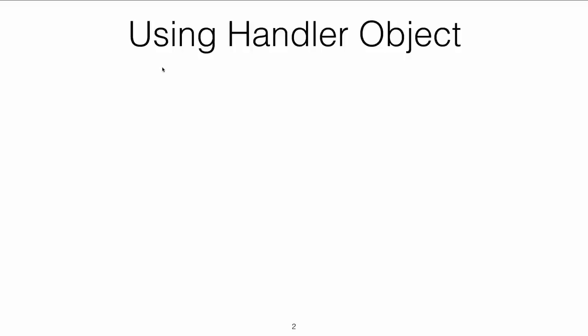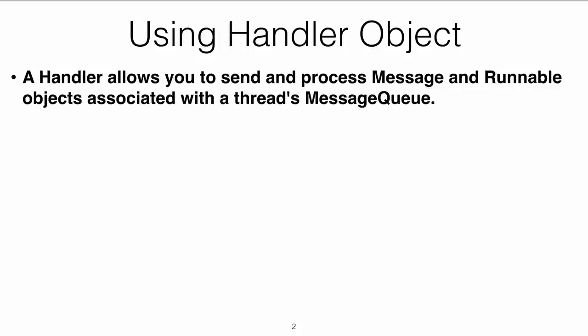The handler object is an object that enables the child thread to send messages that will be queued into the main thread's message queue. The handler object is synchronized, so we don't have to worry about synchronization here. The message can be in the form of an actual message or it can be a runnable.